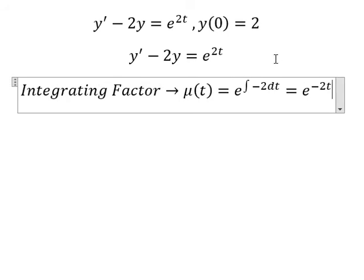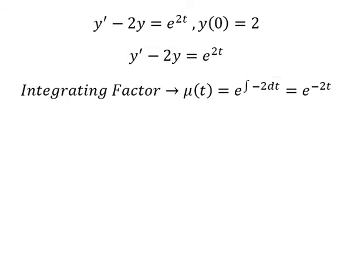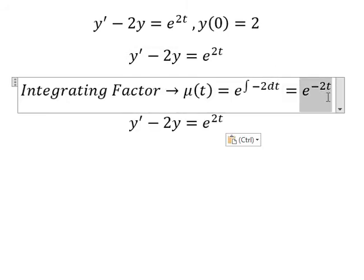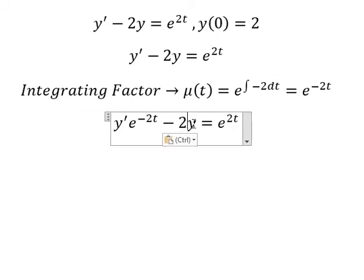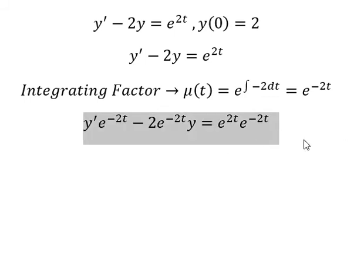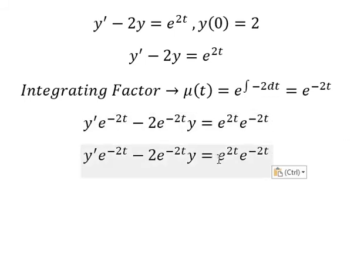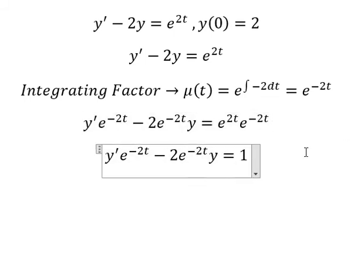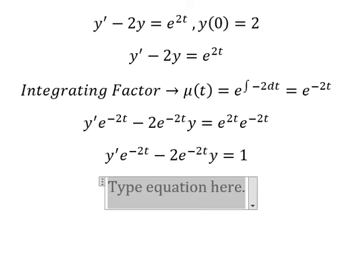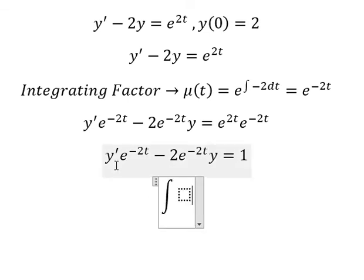t, that means we need to multiply by e to the power of negative 2t for both sides. This one we have number 1 later, that we put the integral for both sides.